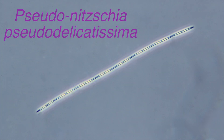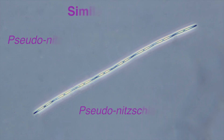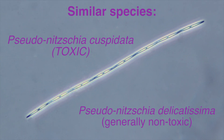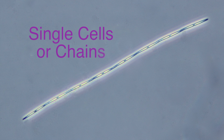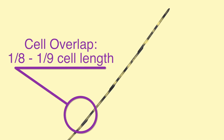Pseudo-nitzschia pseudodelicatissima, a small-type Pseudo-nitzschia species, is toxic and similar under the light microscope to Pseudo-nitzschia cuspidata, which is also generally toxic, and Pseudo-nitzschia delicatissima, which is generally non-toxic. This group can be found as single cells or in chains, and the cell ends generally appear pointed with a cell overlap in chains that covers about one-eighth to one-ninth of cell length.